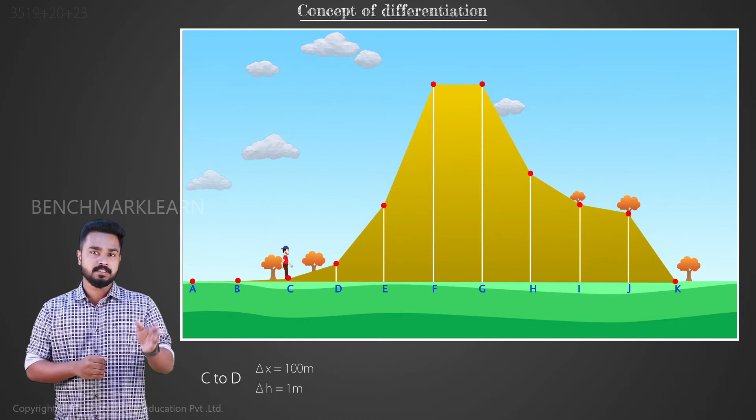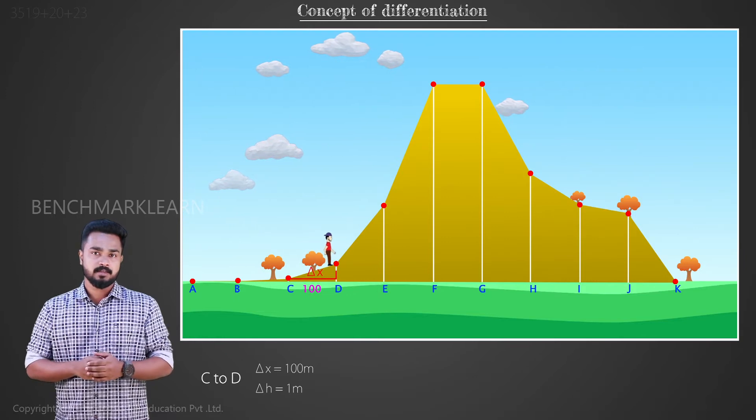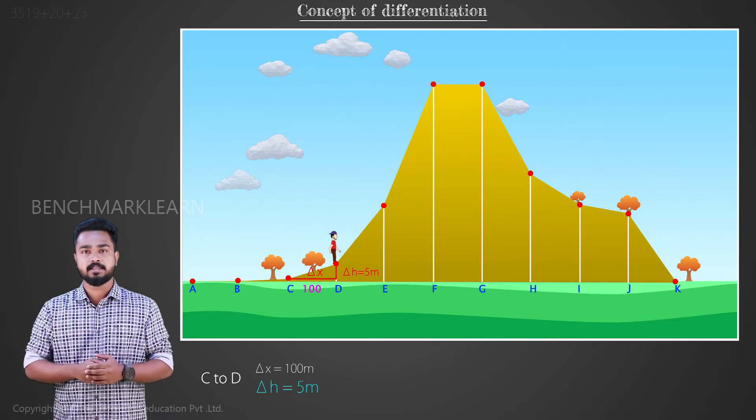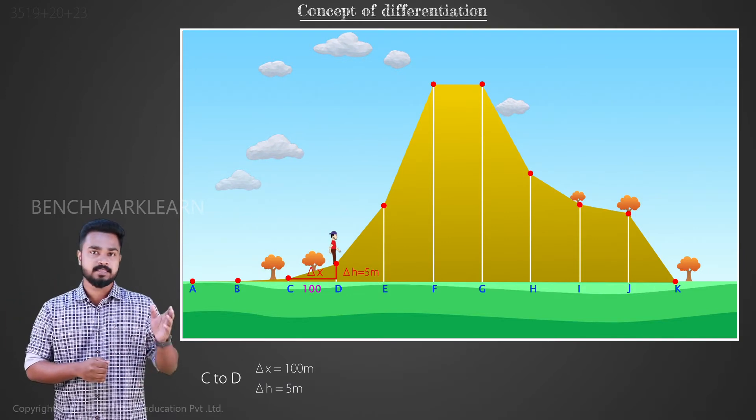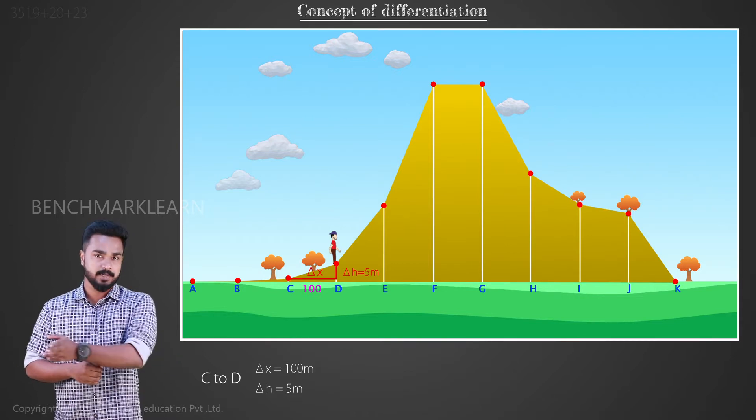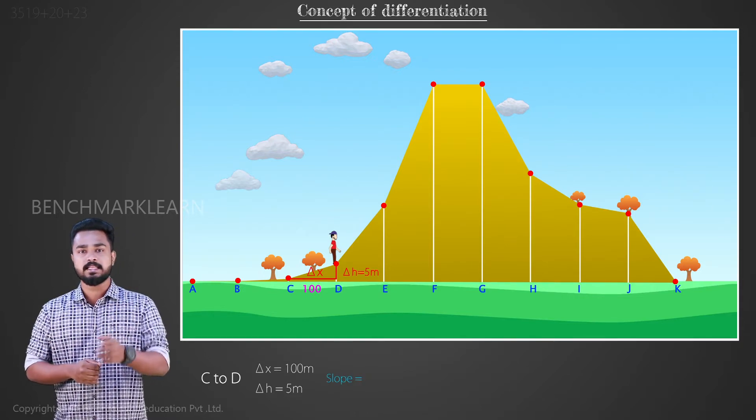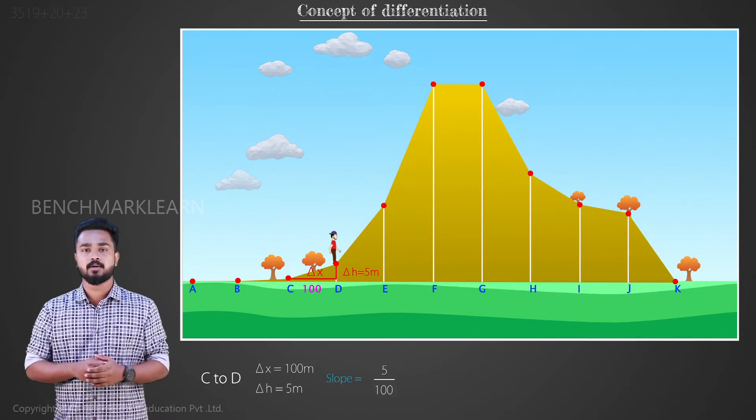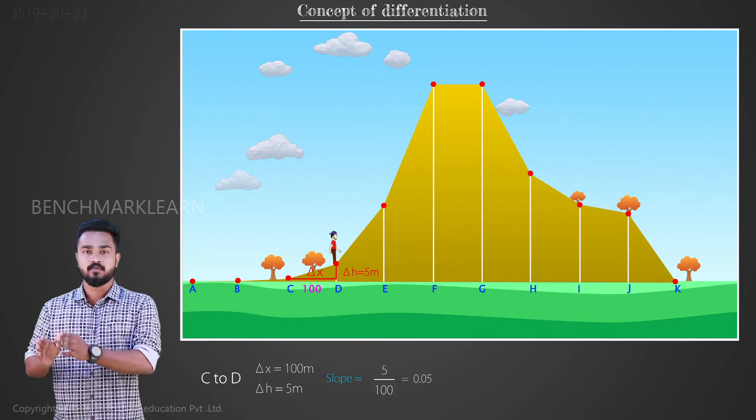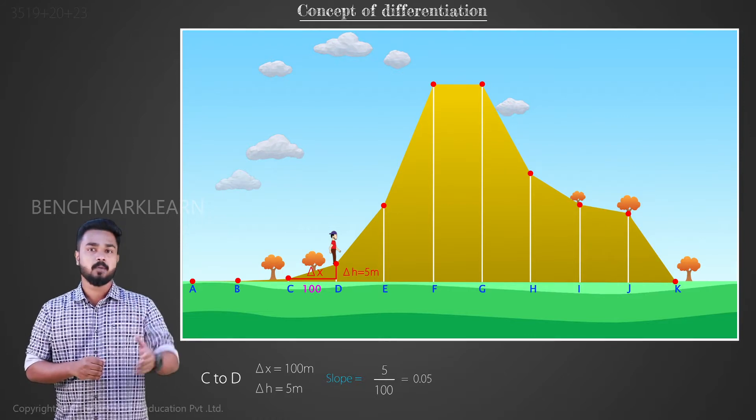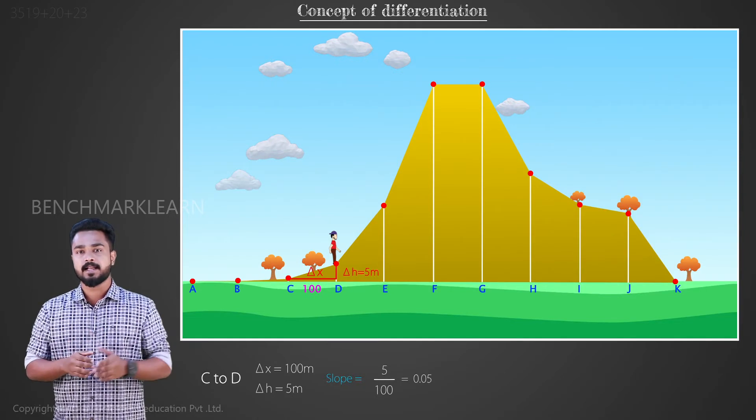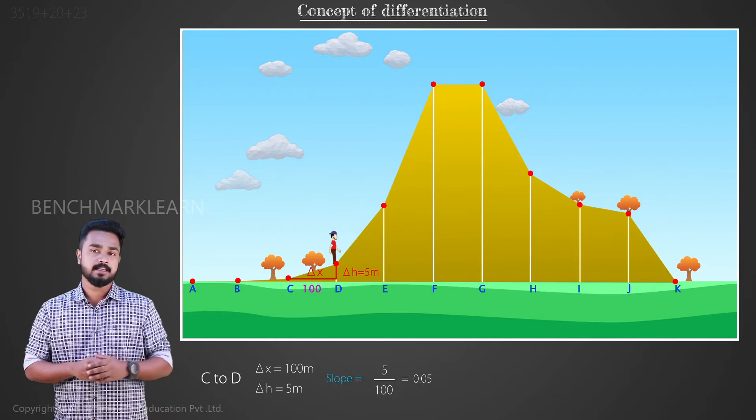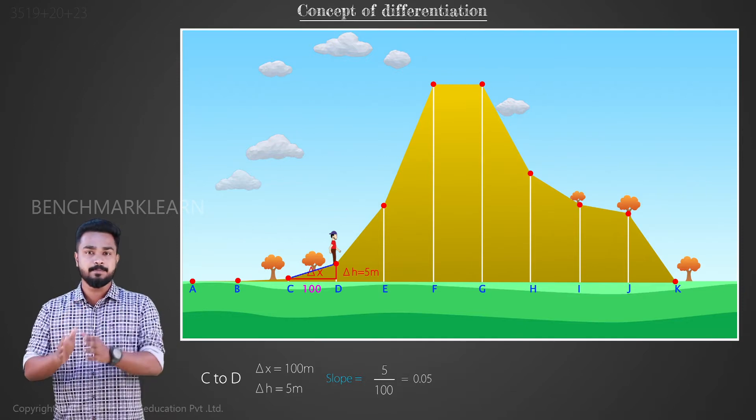Now moving from C to D, we cover a vertical distance of 5 meters while moving the same horizontal distance of 100 meters. The slope of CD is 5 by 100, that is equal to 0.05. The slope of CD is greater than BC. That is, CD is steeper than BC.